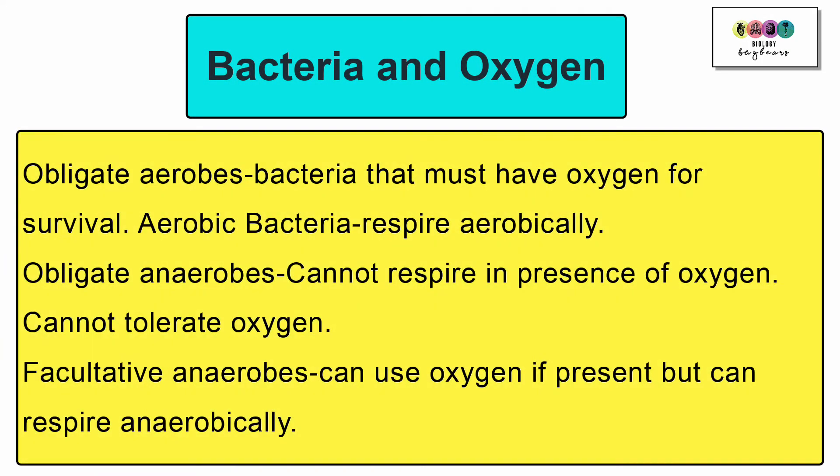Bacteria and oxygen. So some bacteria need oxygen and others don't. For example, obligate aerobes. These are bacteria that must have oxygen for survival. They are aerobic bacteria. They respire aerobically. Then there are obligate anaerobes. These cannot respire in the presence of oxygen. They cannot tolerate oxygen. Then there's facultative anaerobes. They can use oxygen if present but they can respire anaerobically.